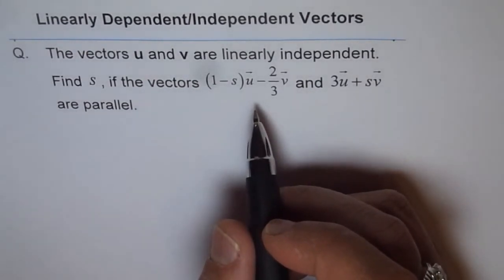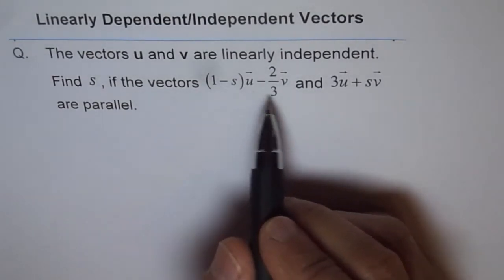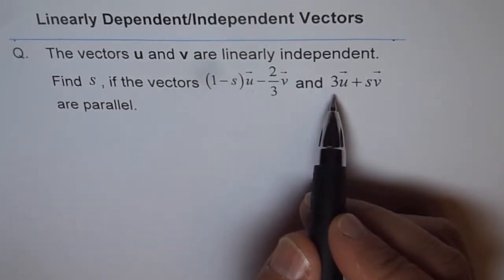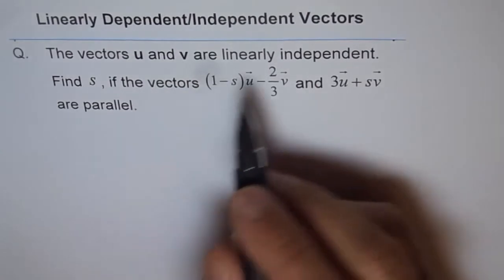Now, here the strategy is going to be that we are given that these two vectors are parallel. If they are parallel, then they are scalar multiples. And remember, u and v are linearly independent. They are not scalar multiples.